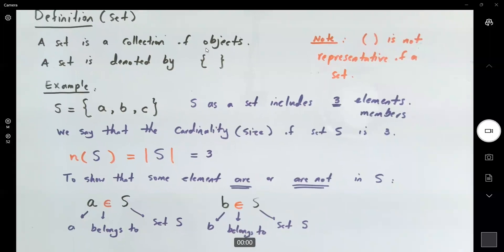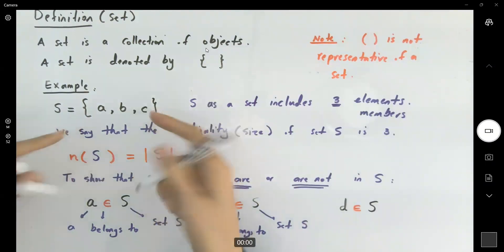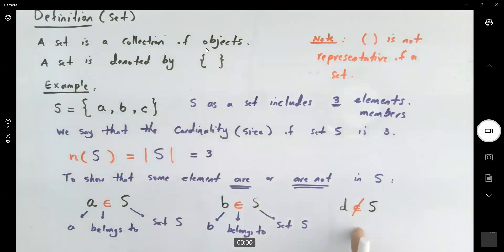Now, take a look at this guy here. I'm going to write D belongs to S. Is it true? Do we have a member like D in this set? Of course not. D is not a member. What are you going to do? You're going to cross this belongs to. You're going to say that D is not a member of S.